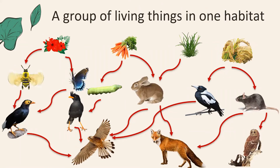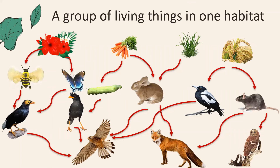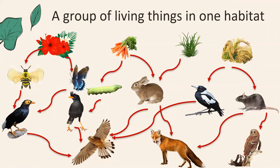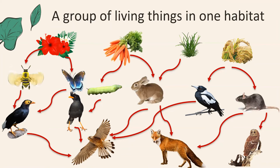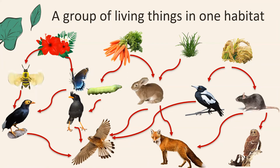Here is an example of a food web with a group of living things in one habitat. We have plants that are eaten by the bee and the butterfly. The bee is also eaten by the hill miner, who is eaten by the falcon — that is one food chain. We also have carrots eaten by the caterpillar, who is eaten by the white-vented miner, which is eaten by the falcon — that is another food chain.